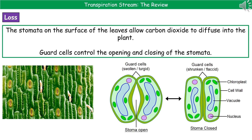When the plant has plenty of water, the guard cells are swollen or turgid and the stomata are open. But if the plant doesn't have much water, then the guard cells are shrunken or flaccid and the stomata are closed.